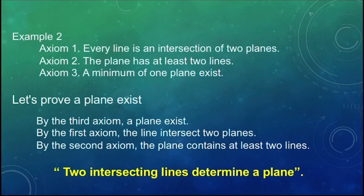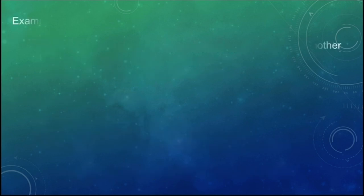Next, for our third example: Axiom 1: There are 4 real numbers. Axiom 2: The sum of 2 numbers is equal to the sum of another 2 numbers. Axiom 3: At least 2 numbers are equal.